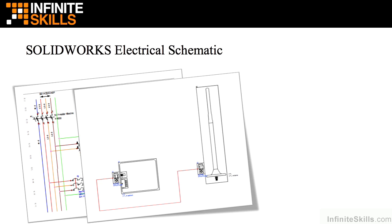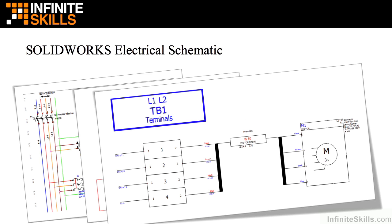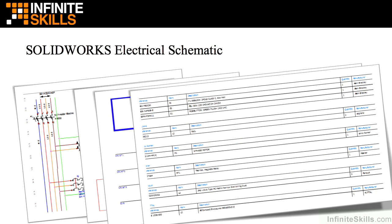It is also used to create single-line diagrams that can be used to describe a system from a higher level. From these schematics and single-line diagrams, automatic reports can be generated — this one showing a terminal strip layout. This is a report showing the bill of materials of components that was generated automatically based on the manufacturer items tagged to each symbol that was placed on the schematic.